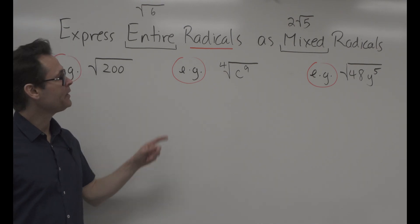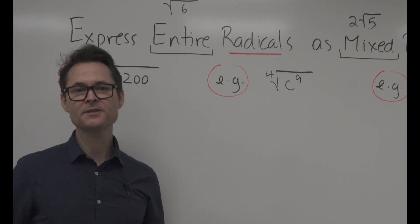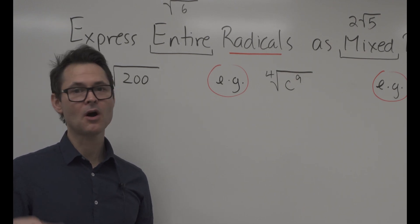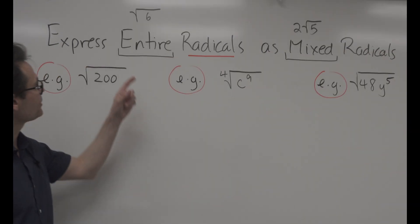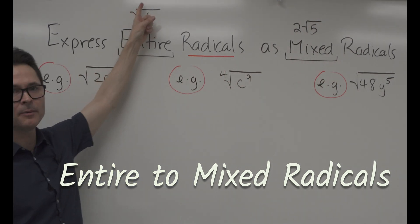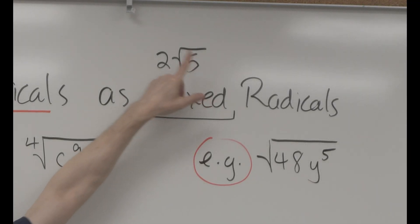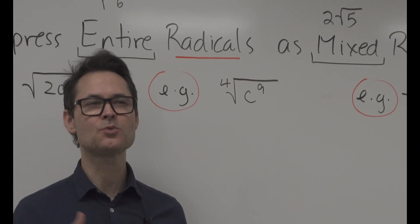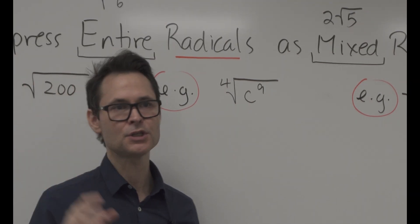We've already looked at how we go from a mixed radical to an entire radical in a previous video. Today we're going to go from an entire radical to a mixed radical. An entire radical is where the number is entirely under the radical, and a mixed radical has some numbers on the inside and some on the outside. This is typically how we deal with radicals — we take as much as we can out of the inside and put it as a coefficient in the front.